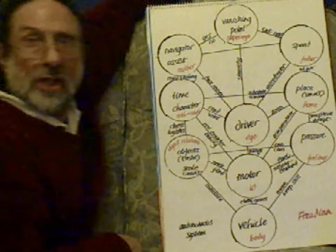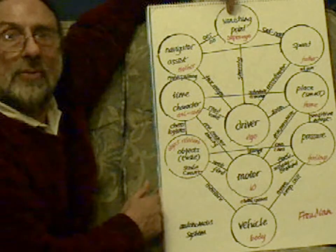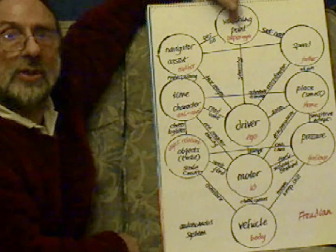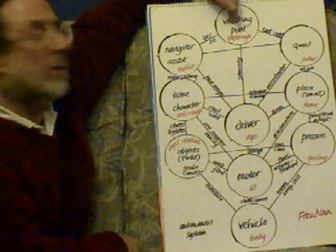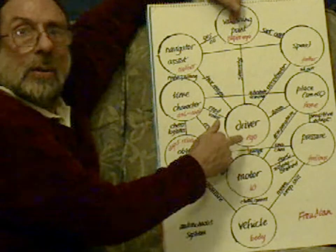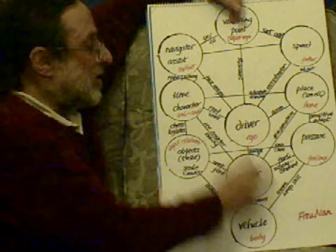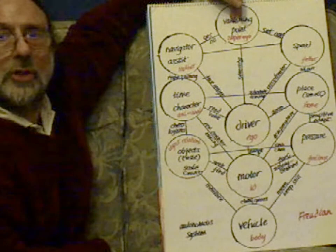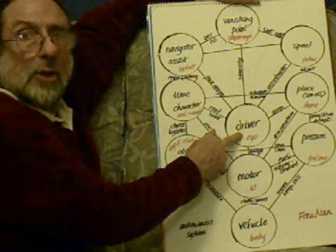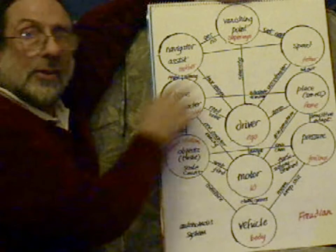There we have the vanishing point — the point that we're driving at, the point that we're looking at, the point in our minds that we're focusing on. Here we have the driver, which in our sense is the ego, in the Freudian sense is the ego, and in the sense of the autonomous system it's a driver. You've got to put yourself in the position of the driver, the position of the ego, to understand the whole structure.